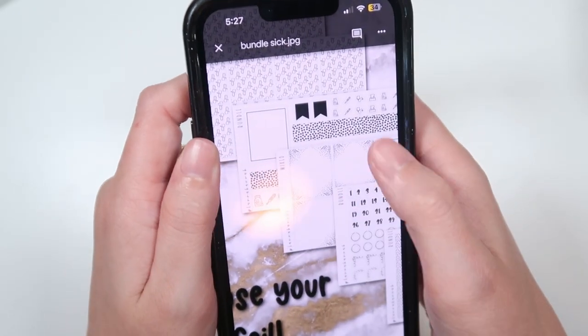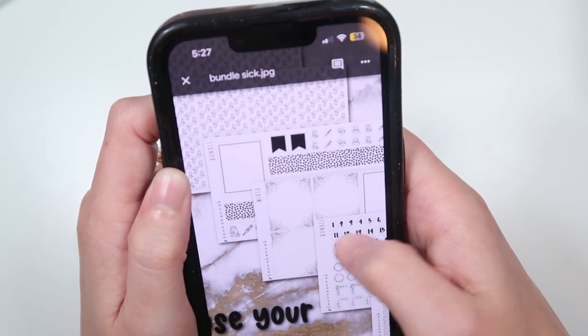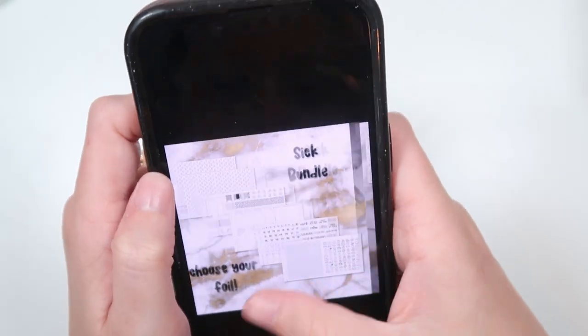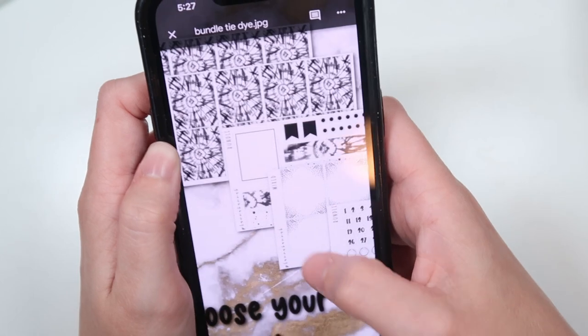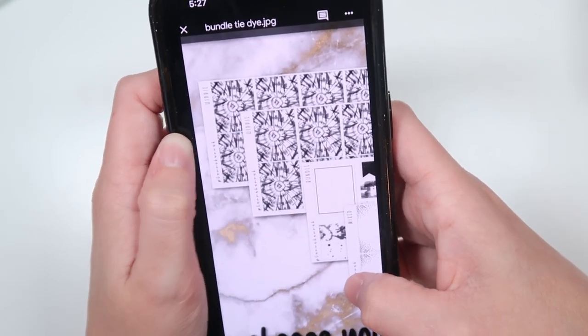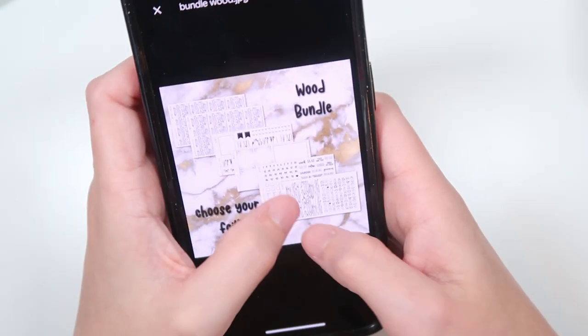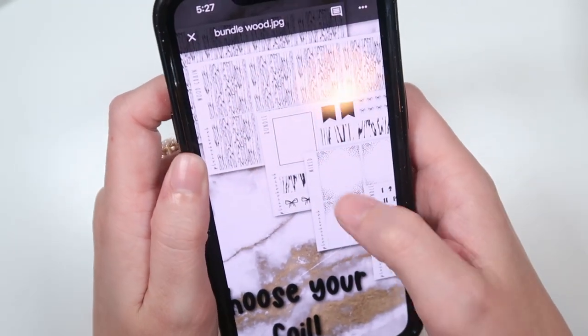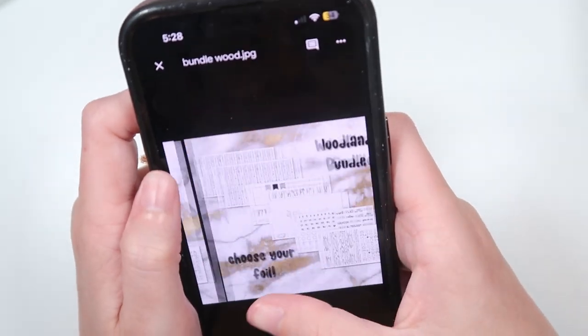We've got a sick day bundle with confetti headers, confetti, and then a custom sick day washi which has a pill bottle, a thermometer, a stethoscope, and some tissues, and then the doctor underlays which are stethoscopes. We've got the tie-dye bundle which has confetti headers, tie-dye and confetti washi, and then the hippie underlays. We've got the wood bundle which has the wood headers, a custom to the bundle wood washi as well as bow washi, and then the wood grate underlays.